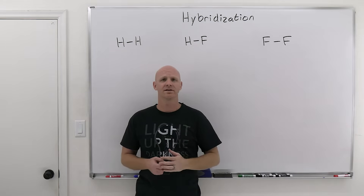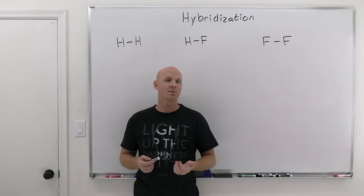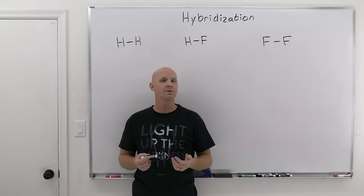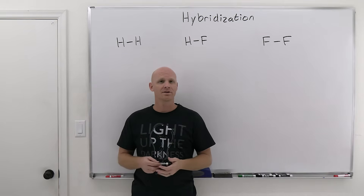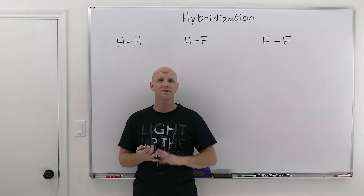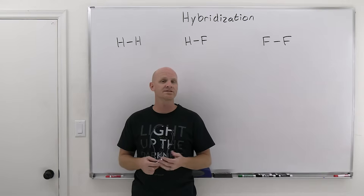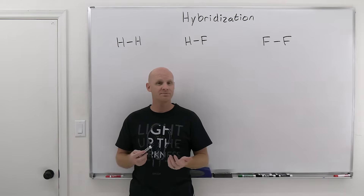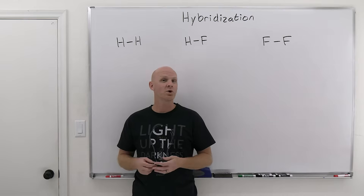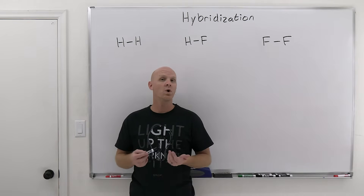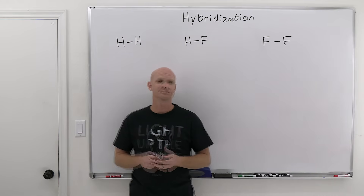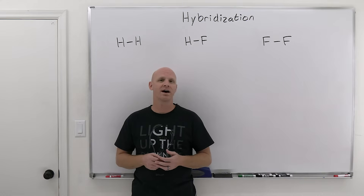Hybridization is going to be the topic of this lesson, and we'll introduce valence bond theory to start, which talks about atomic orbitals overlapping during bond creation. Then we're going to talk about the different hybrid orbitals: sp, sp2, sp3, and even some of the more complex ones for expanded octets. We'll look at a Lewis structure and know the hybridization of an atom, as well as know what atomic orbitals or hybrid orbitals are overlapping in the creation of a bond. My name is Chad, and welcome to Chad's Prep, where my goal is to take the stress out of learning science.